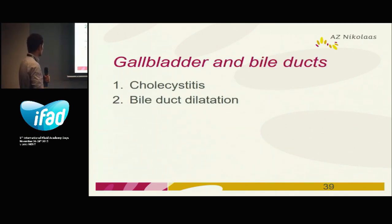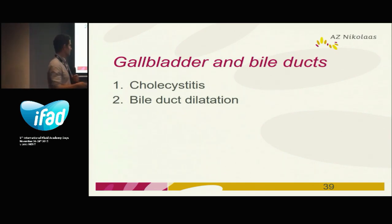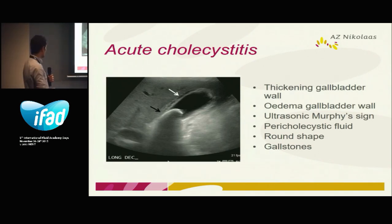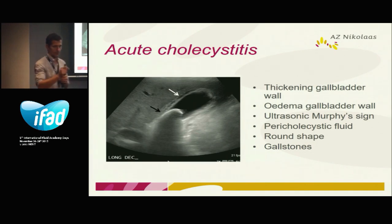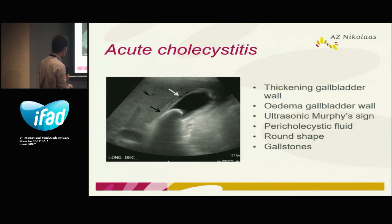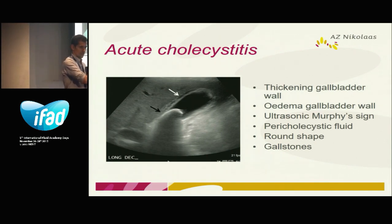Two very important things you can easily appreciate with ultrasound: cholecystitis and bile duct dilatation — very important for the ICU. In cholecystitis, this is the gallbladder, here we see a stone, and this is the gallbladder wall. Normally the wall is very thin and barely visible. Here we see between the liver and gallbladder a thickened multiple-layered wall with hyper- and hypoechoic layers — this edema in the gallbladder wall is very diagnostic for cholecystitis.